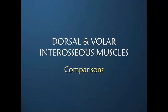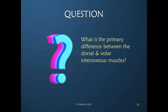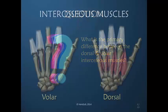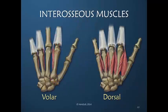Let's compare and be sure that we have an accurate understanding of the differences in the dorsal and volar interosseous muscles. The primary difference is ab and adduction, but there are also differences in sizes, origins, insertions, and simply the number of muscle bellies.